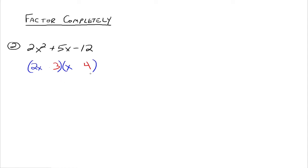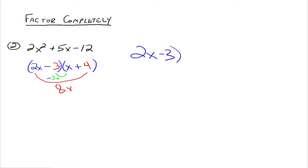We need to do a little math. We know 2x times 4 gives 8x, and 3 times x gives 3x. To get a positive 5x, this has to be plus and this has to be minus. So 2x times 4 gives 8x, negative 3 times x gives negative 3x, and 8x minus 3x gives positive 5x. Then negative 3 times 4 gives negative 12, and 2x times x gives 2x squared. So 2x minus 3 times x plus 4 is what this factors into.